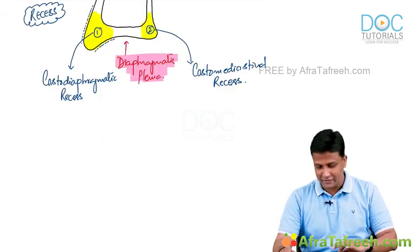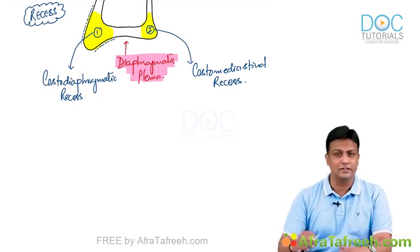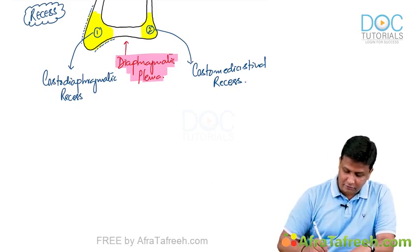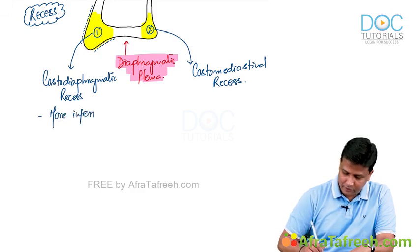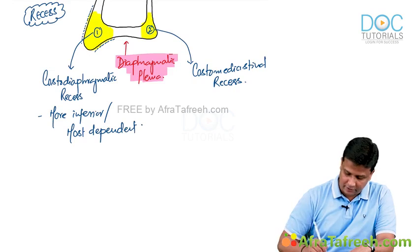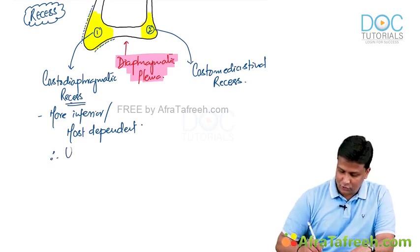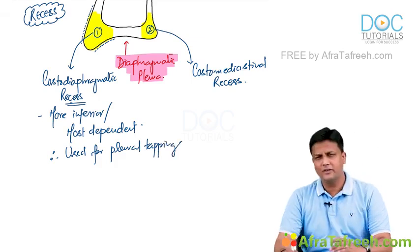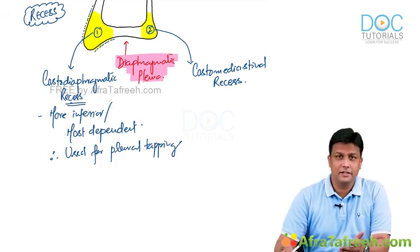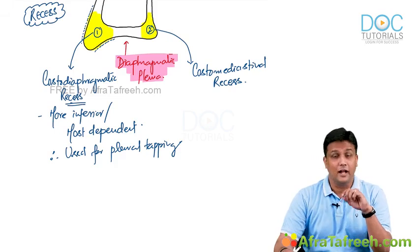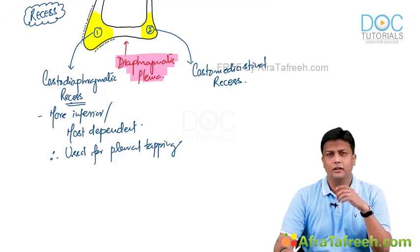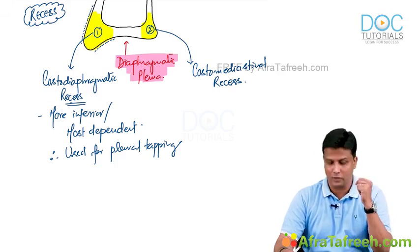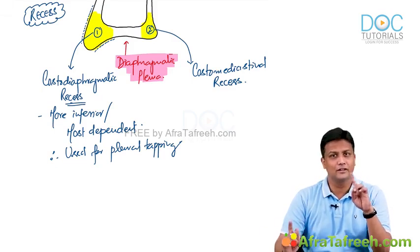Because fluid collects in the costodiaphragmatic recess, pleural tapping is done along the mid axillary line at the 7th, 8th, or 9th intercostal space. The costodiaphragmatic recess is the most dependent recess, and that is why it is used for pleural tapping. This correlates with what we studied in the intercostal space topic, including which muscles the needle crosses.